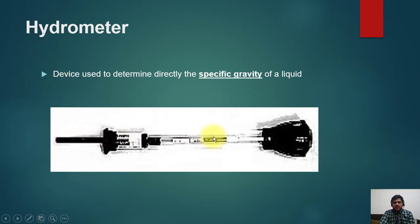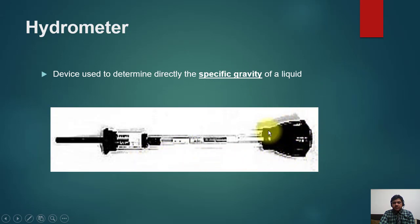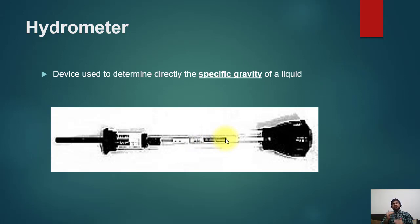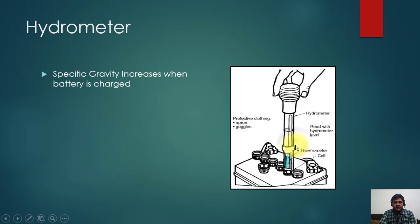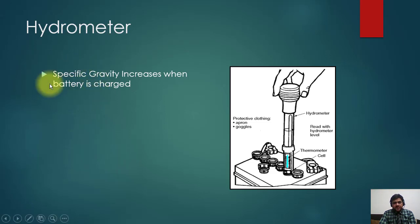To measure the specific gravity of the electrolyte, you use a device called a hydrometer. You press the black rubber bulb to draw the electrolyte into the hydrometer. A float inside will float in the electrolyte, and you read the position marking to measure the specific gravity. For lead-acid batteries specifically, the specific gravity increases when the battery is charged. For other types of batteries, specific gravity does not change significantly.